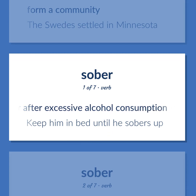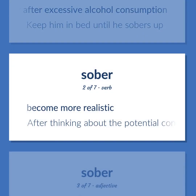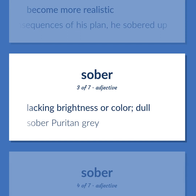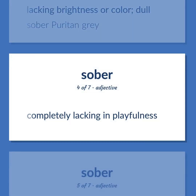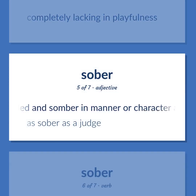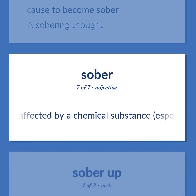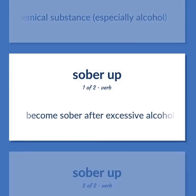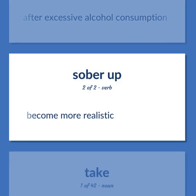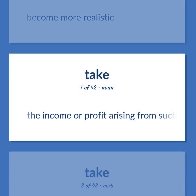Become sober after excessive alcohol consumption. Keep him in bed until he sobers up. Become more realistic. After thinking about the potential consequences of his plan, he sobered up. Lacking brightness or color; dull. Sober Puritan gray. Completely lacking in playfulness. Dignified and somber in manner or character, and committed to keeping promises. As sober as a judge. Cause to become sober. A sobering thought. Not affected by a chemical substance, especially alcohol. Become sober after excessive alcohol consumption. Become more realistic. The income or profit arising from such transactions as the sale of land or other property.